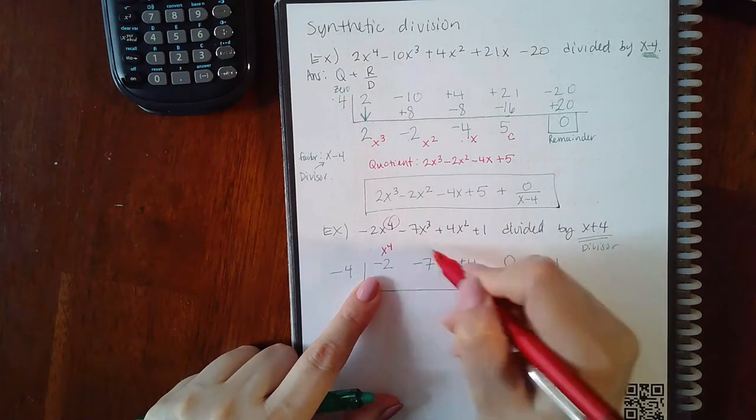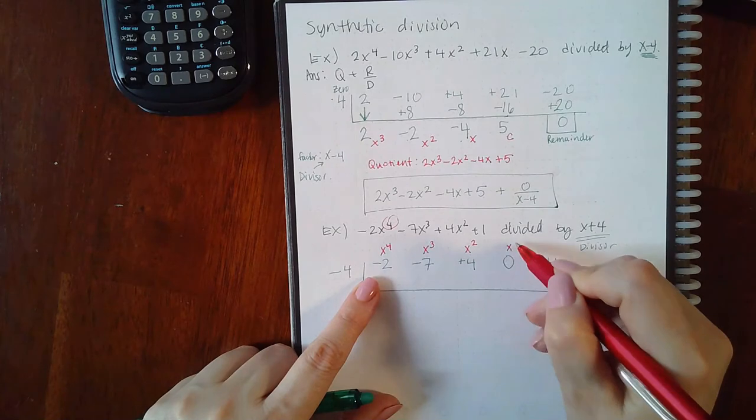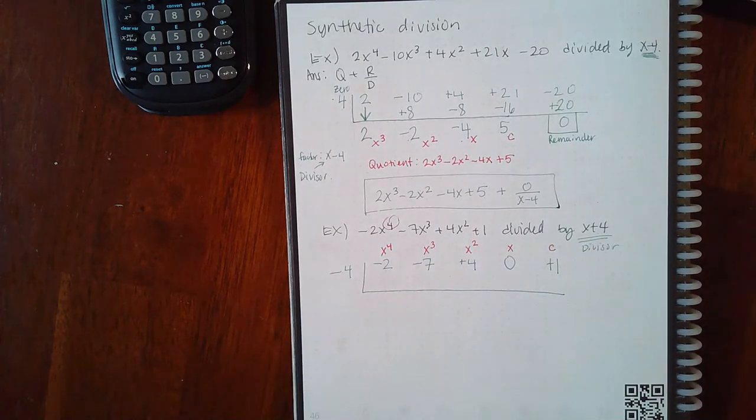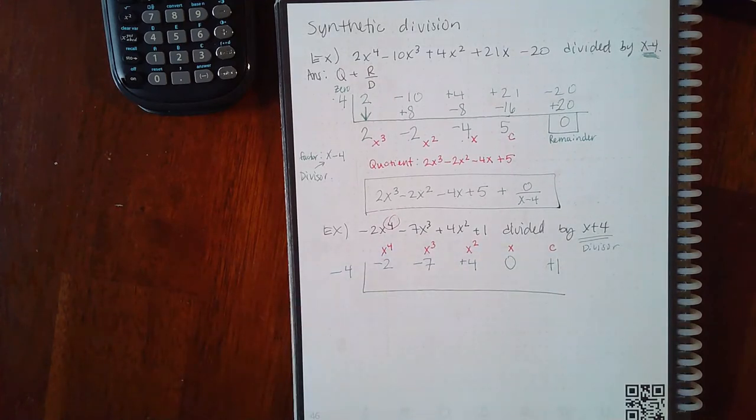Since my highest exponent was x to the fourth, I had to have a coefficient for x cubed, one for x squared, one for x, and something for the constant. You start with the highest and you have to have something in there for every other term. Since I was missing x, I had to fill it in with the zero for that space.